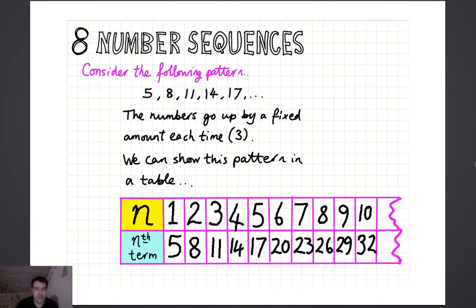Consider the following pattern: 5, 8, 11, 14, 17. You can see that the numbers go up by a fixed amount every time, which is 3. So you can show the pattern in a table.